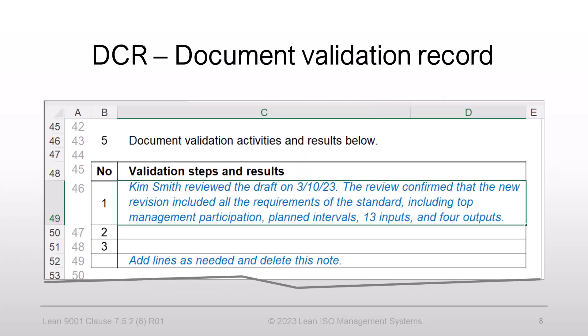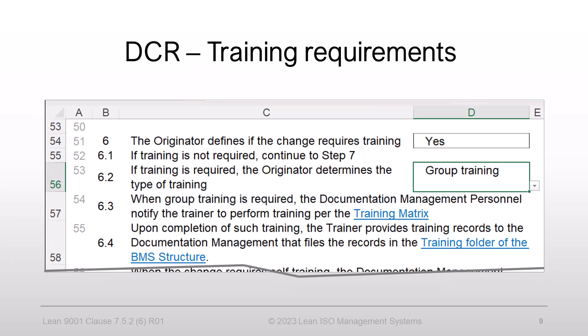Look at this example of the validation record. Kim Smith checked the draft on March 3, 2023. The review confirmed that the new revision contained all the standard requirements, including top management participation, planned intervals, 13 inputs, and 4 outputs. If you choose to follow this path, try not only to have a signature and a date stating that so-and-so validated the procedure, but also include an explicit description of who, when, and how.